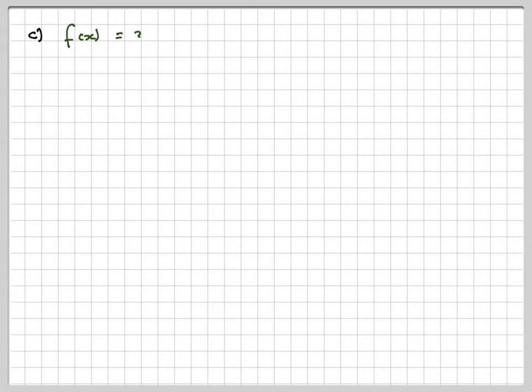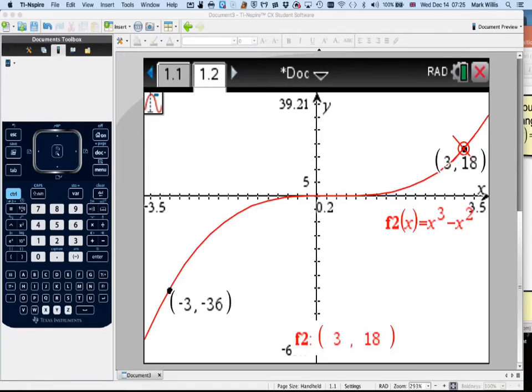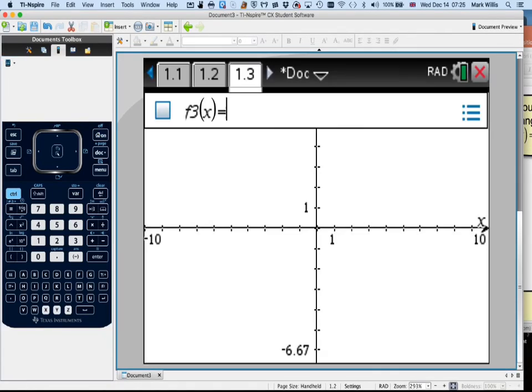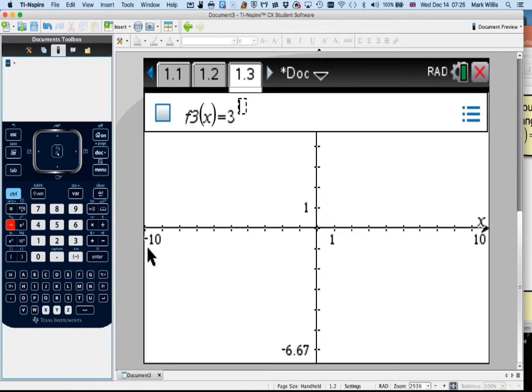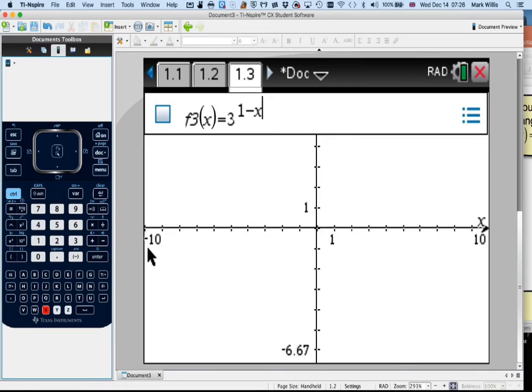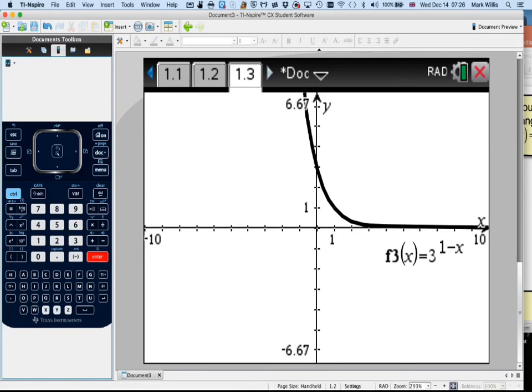Right. To our final one. Our final one is f(x) is 3^(1-x). So we're going to go to our graph of that. So we just go to menu here, go to graph, and 3 to the power of, that's that button, 1 - x, press enter, and we get a graph looking like that.